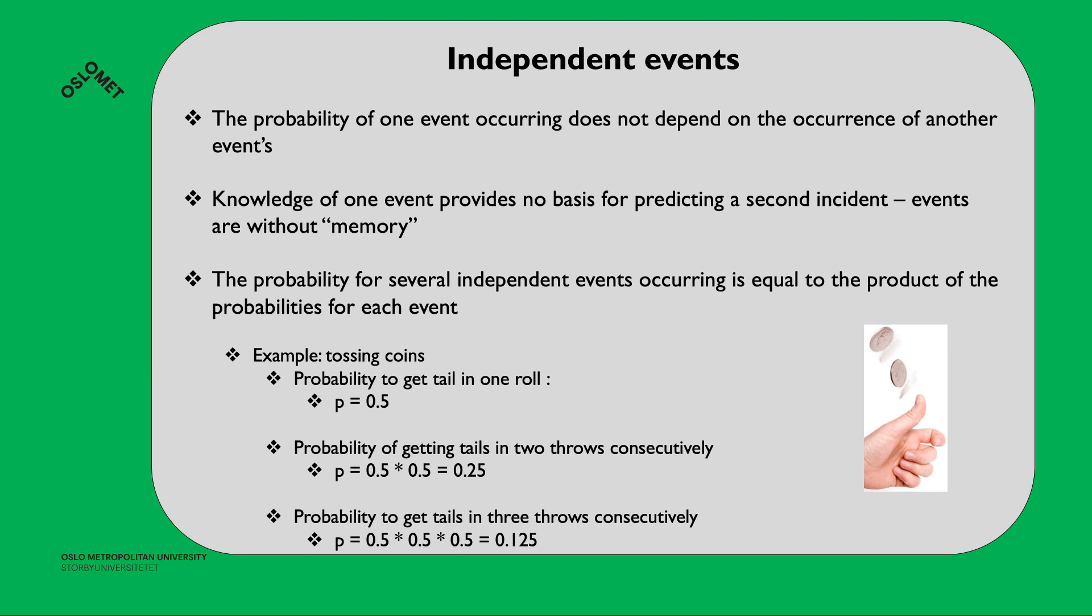Independent events - the probability of one event occurring does not depend on the occurrence of another event. Knowledge of one event provides no basis for predicting a second incident. Events are without memory. The probability of several events occurring is equal to the product of the probability for each event.